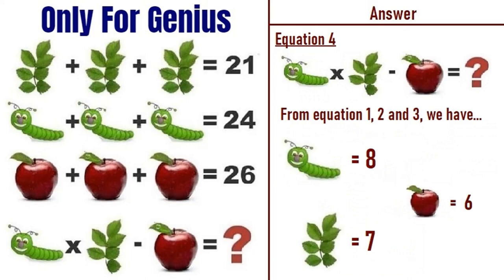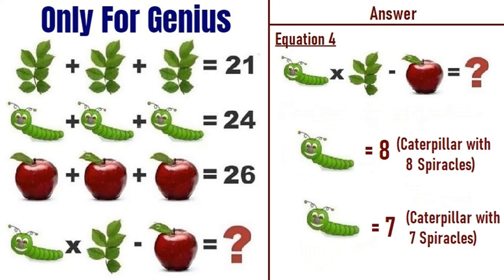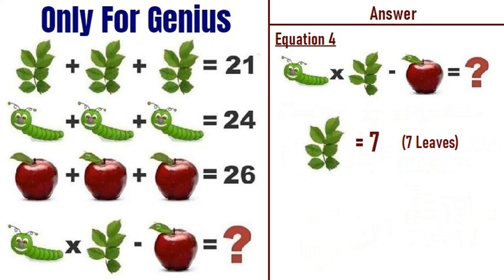Moving on to equation number four. From equations one, two, and three we have caterpillar equals 8, leaves equals 7, apple equals 6. However, the caterpillar in equation two has 8 sphericles, so it equals 8, while the caterpillar in equation four has only 7 sphericles, so it equals 7.